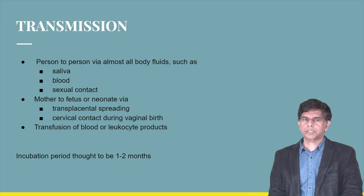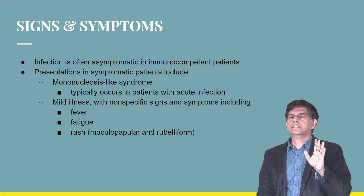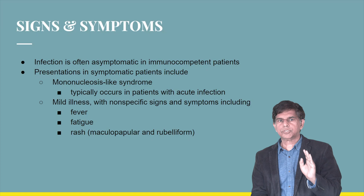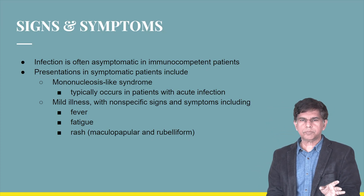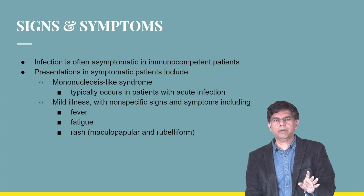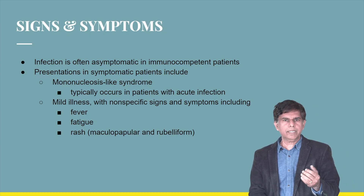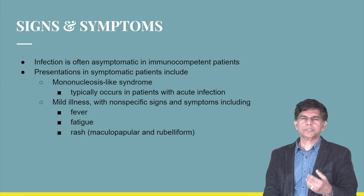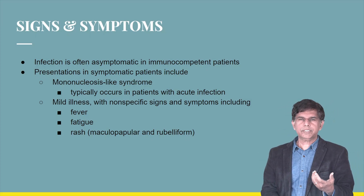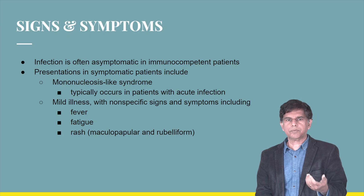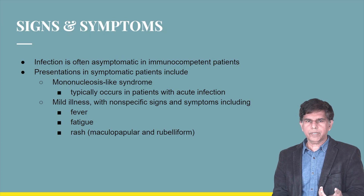Signs and symptoms: most of the time, CMV remains asymptomatic if there is no immune-related problem. Symptomatic patients can present with a mononucleosis syndrome — typically an adolescent or young adult with acute infection — featuring fever, fatigue, and a maculopapular or rubelliform rash. Other nonspecific symptoms include myalgia, lymphadenopathy, rash, hepatosplenomegaly, lymphocytosis, thrombocytopenia, and mildly elevated liver function tests.